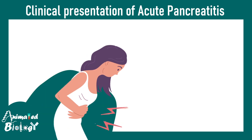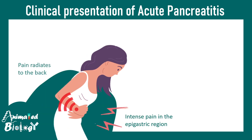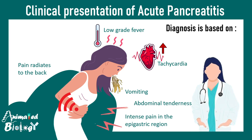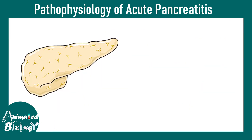The clinical presentation of acute pancreatitis includes intense epigastric pain that can radiate to the back, vomiting, abdominal tenderness, low-grade fever, and tachycardia. Diagnosis is based on these clinical symptoms and serum amylase levels, which would be abnormally high in this case.